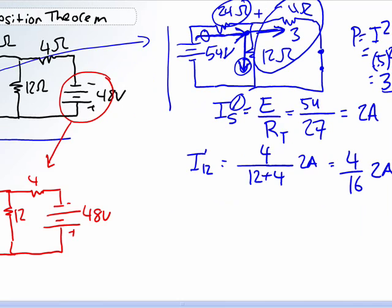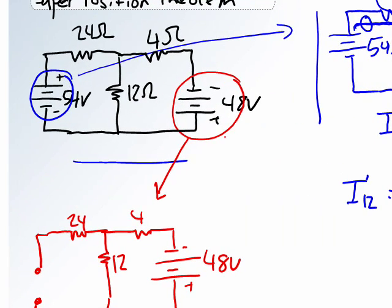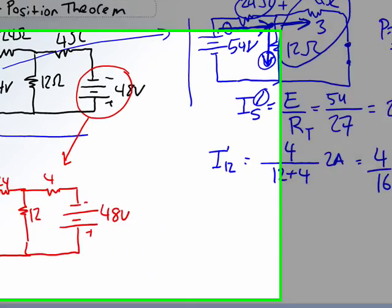Now we'll go ahead and replace, we're actually going to go back to our first network here, and we're going to analyze it from the 48-volt source. So we need to remove the 54-volt source, which was right here. So how do we remove it? We'll replace it with a short circuit right there.